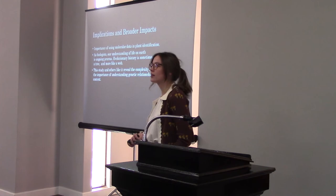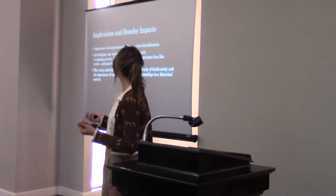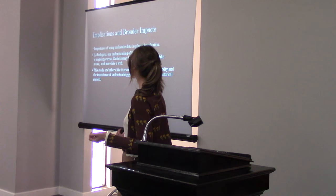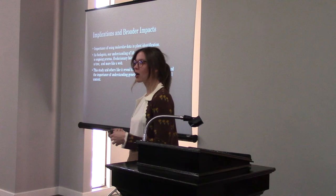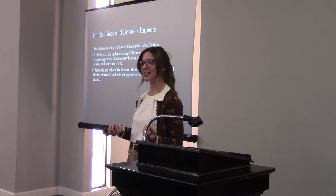When we think about evolutionary history and family trees, we kind of think of them as a really nice, clean branching where everything splits off neatly. But this research highlights the fact that sometimes it's more like a web, where we have cryptic connections and twists and turns. As biologists, this is still an ongoing process. Moreover, it highlights the importance of using molecular data in plant identification, not just morphological features. This study and others like it highlight the complexity of biodiversity and the importance of understanding genetic relationships in a historical context.